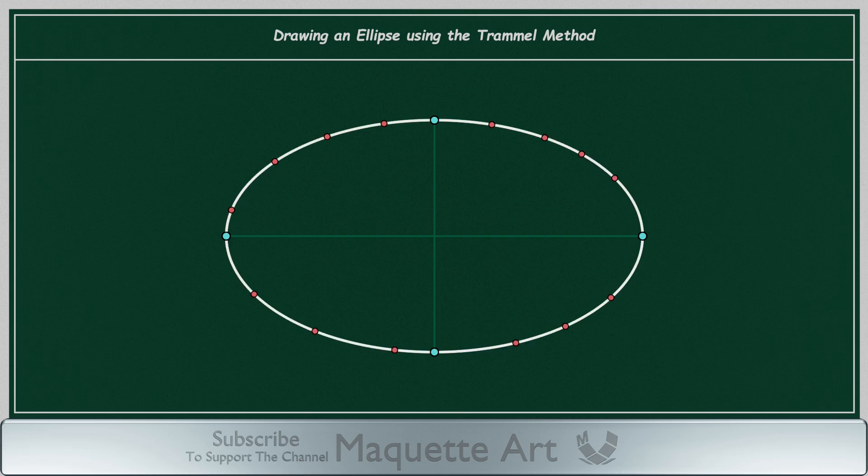Then, by connecting those points, we get the required ellipse. Let's see how this is done.